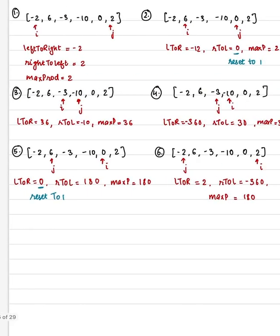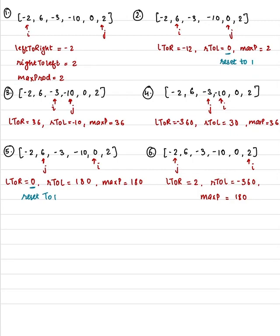Left to right and right to left, and keep track of maximum product. Starting from here, left to right and right to left, initially the product is -2 and 2, so maximum among these is 2. Then we shift towards the side by one and shift towards the side by one.